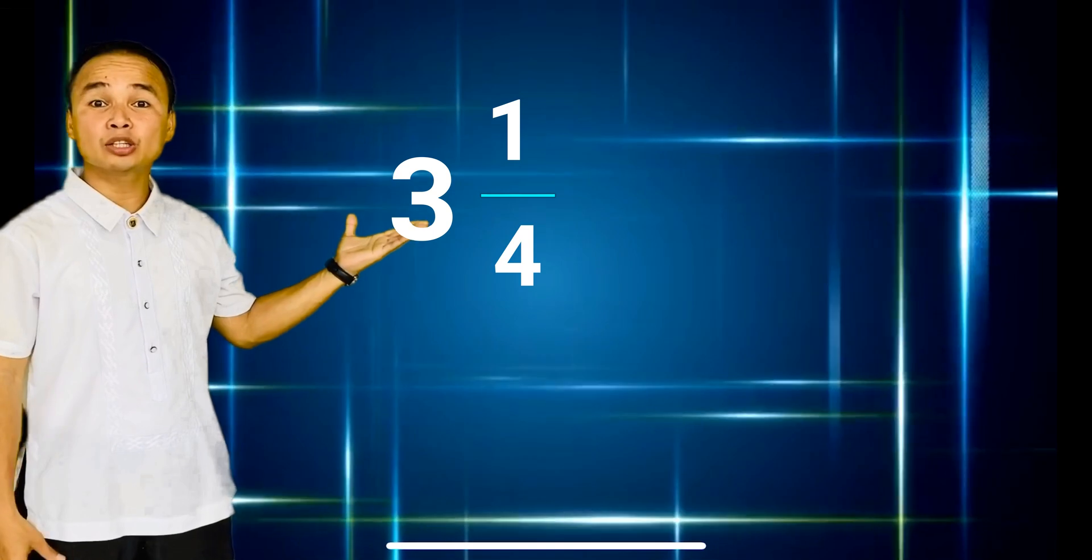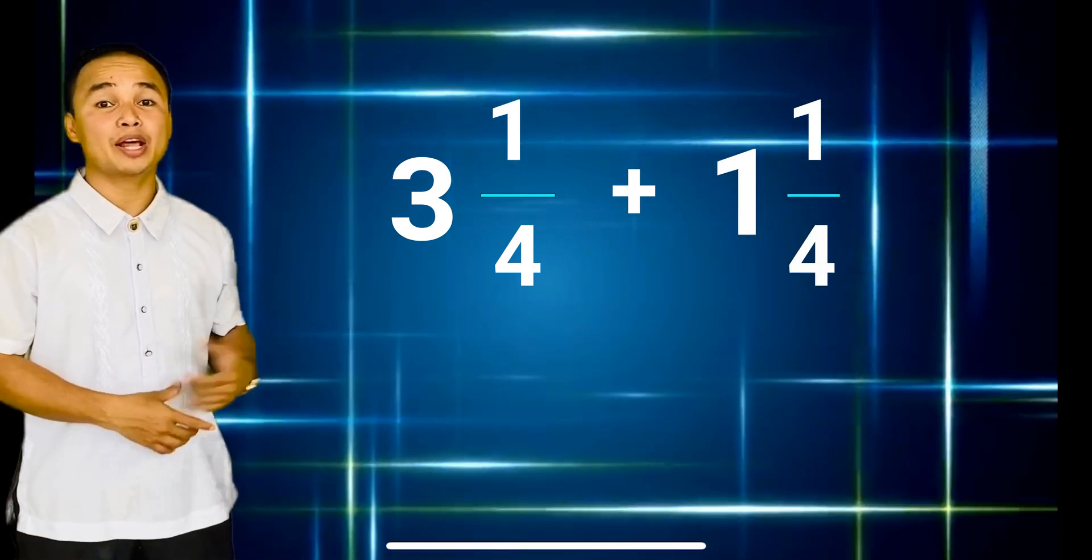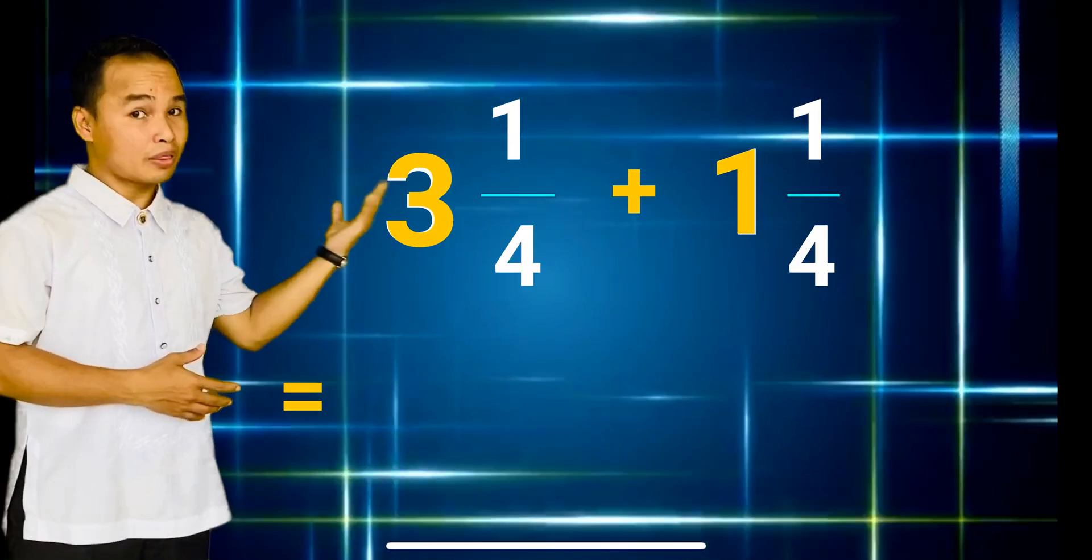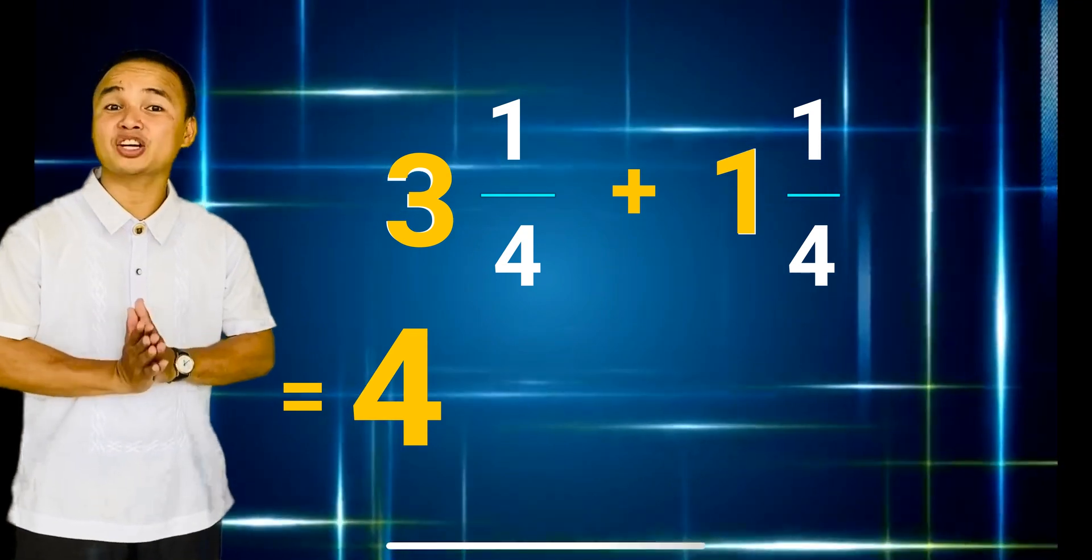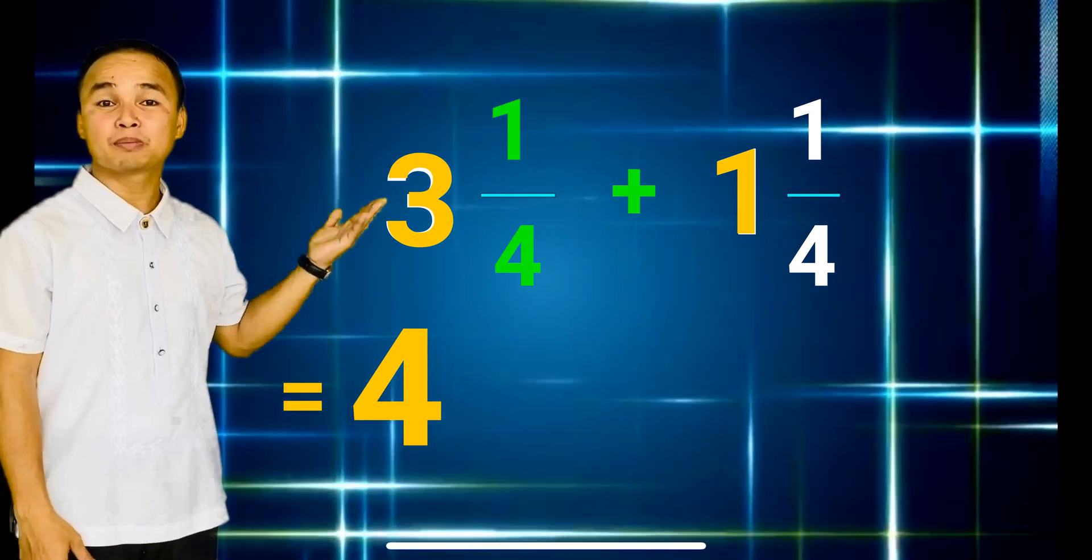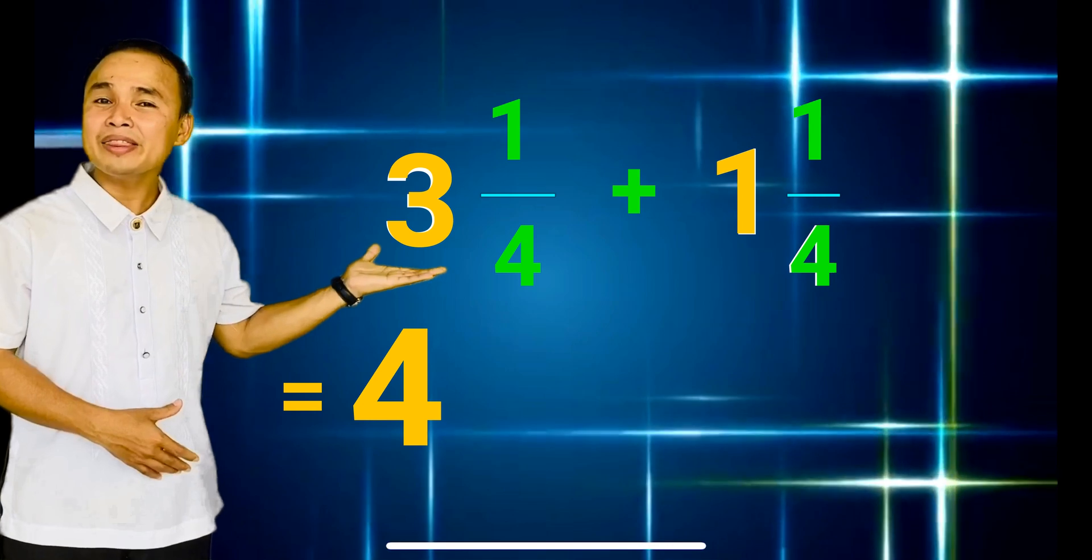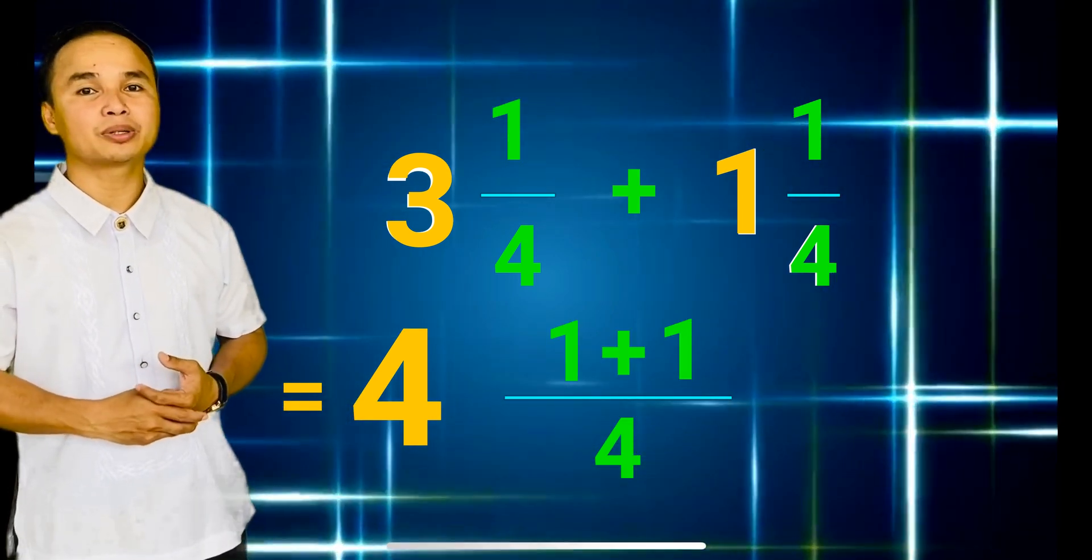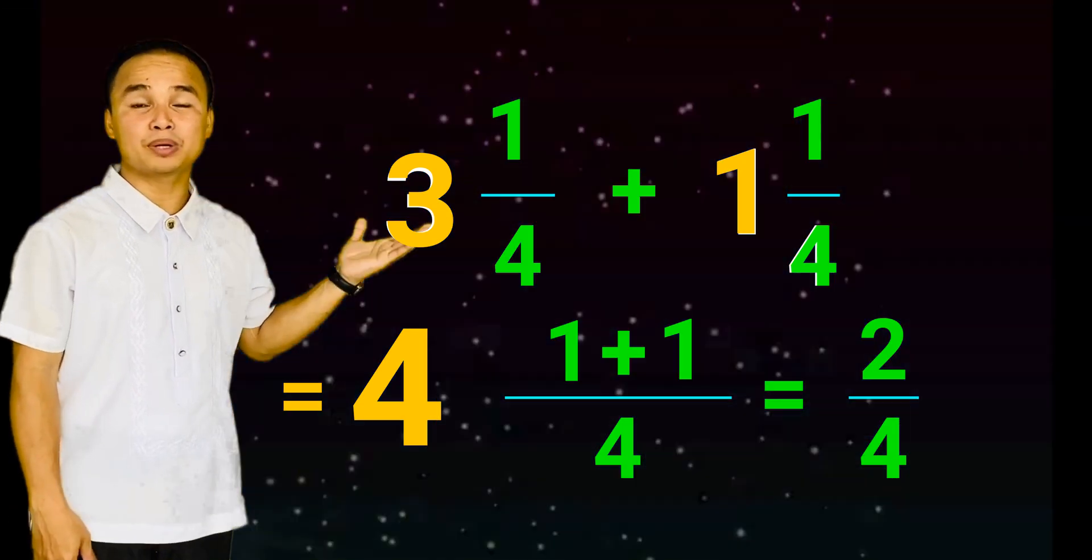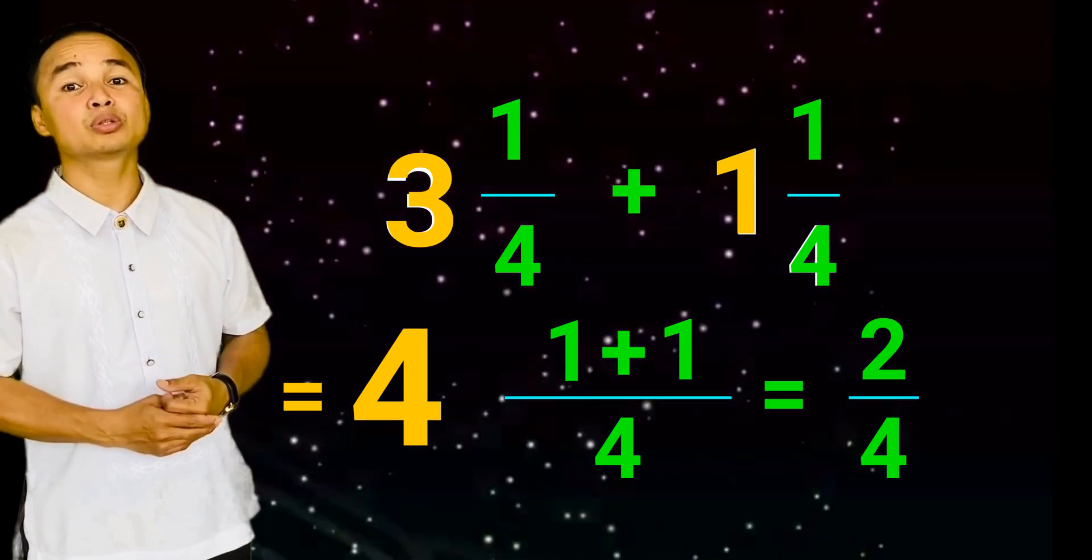Take a look at the next example. Add 3 and 1 fourth plus 1 and 1 fourth. We need to add the whole numbers first and then the fractions. So 3 plus 1 is equal to 4. And then we need to add the fractions. 1 fourth plus 1 fourth. Add the numerators and write the sum over the common denominator. So 1 fourth plus 1 fourth is equal to 2 fourths.